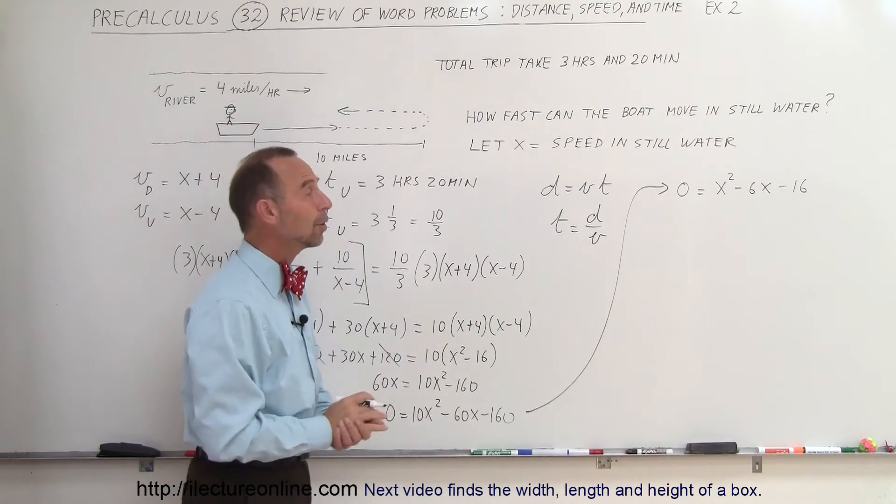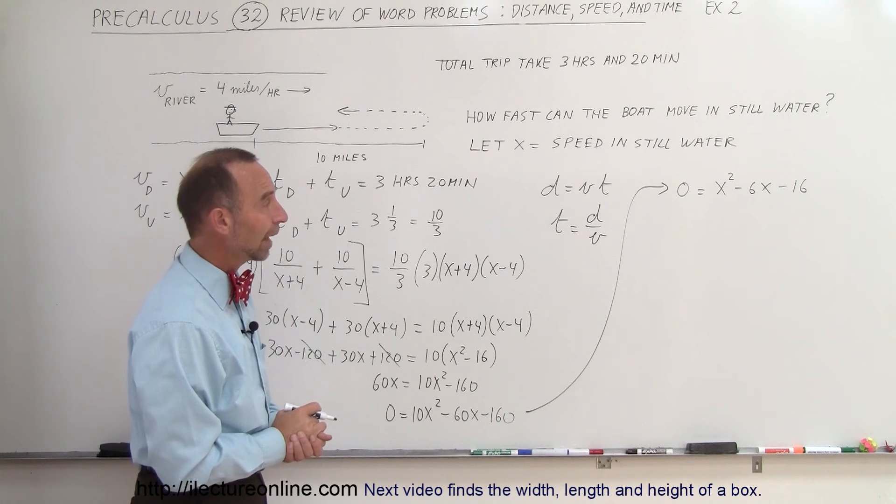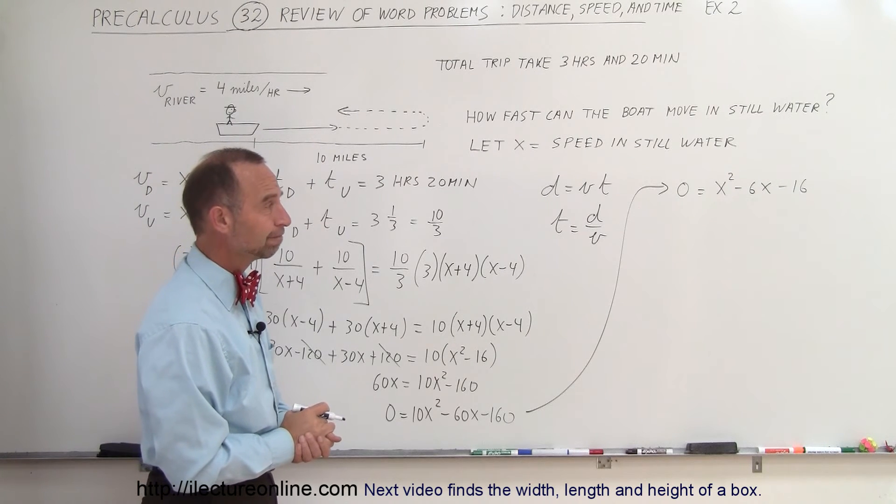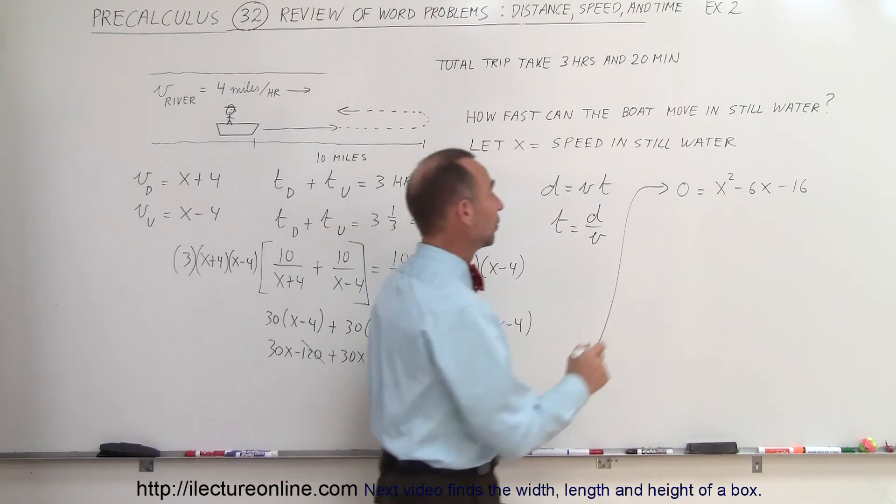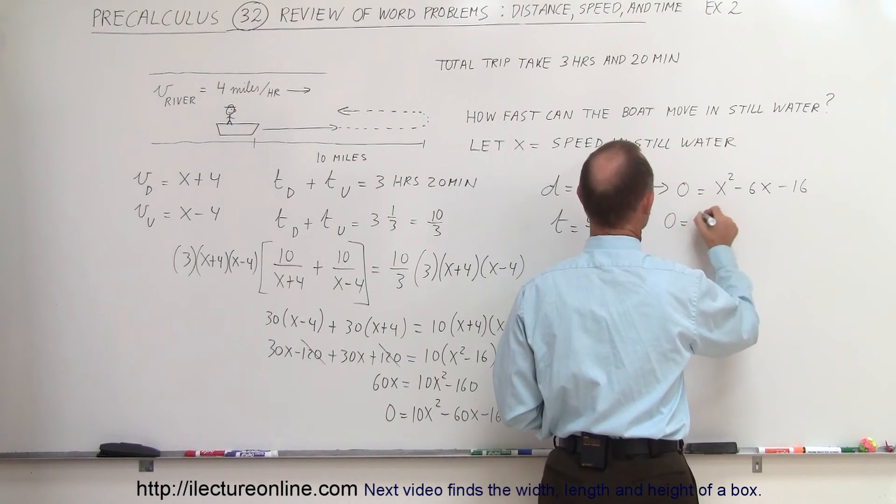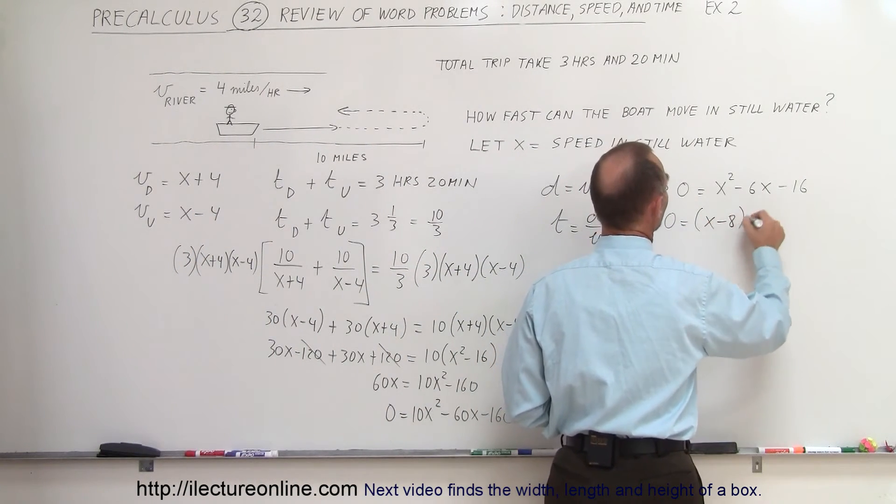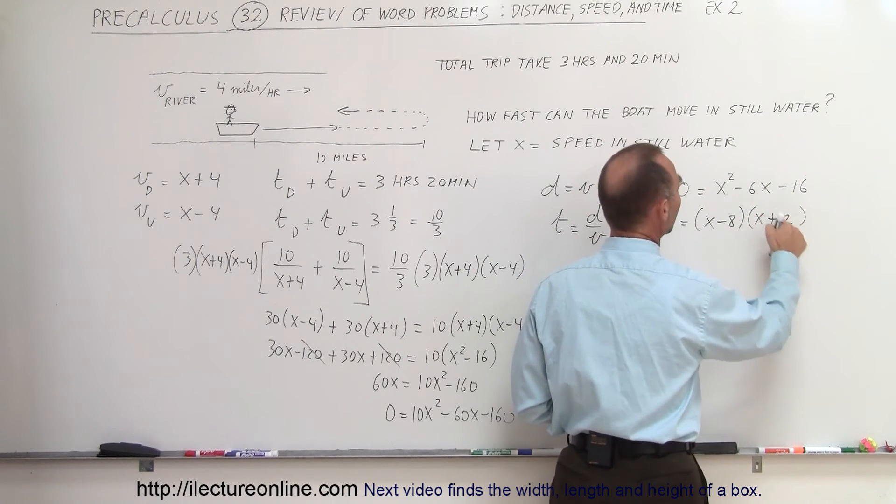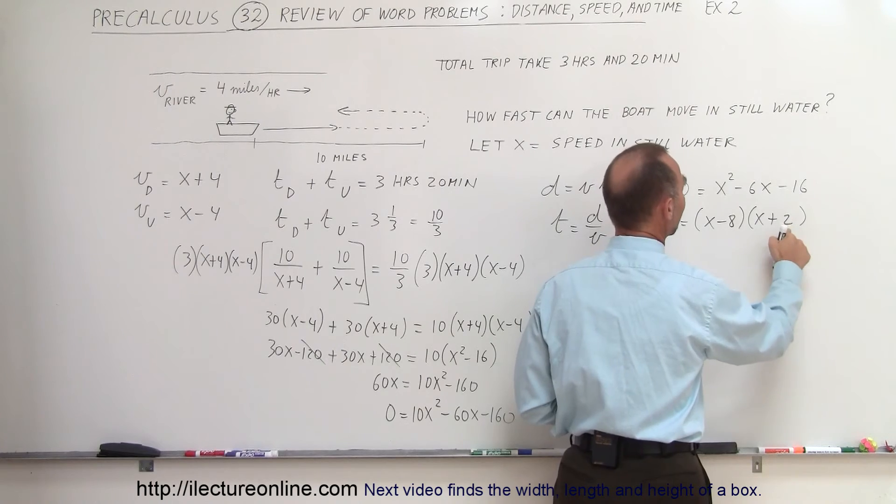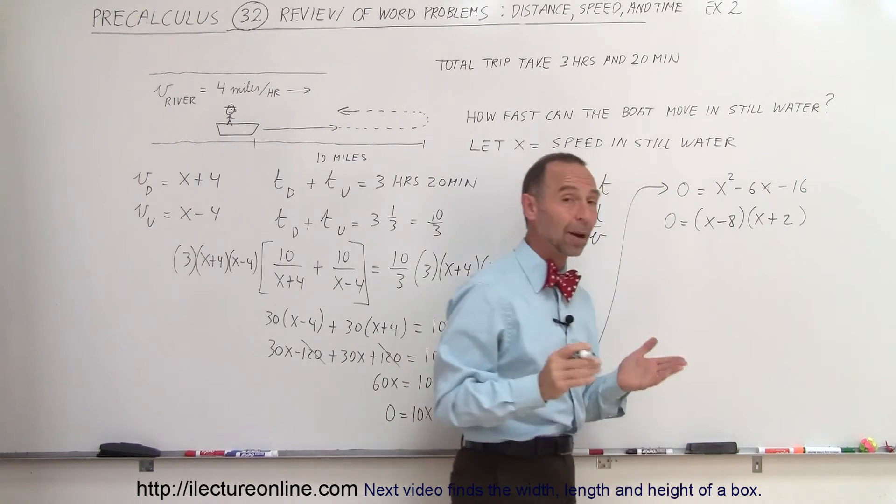All right, now I think we can go ahead and solve that, probably by factoring. Let's see, yes I think we can. So we can factor this, so zero is equal to x minus 8 times x plus 2, because minus 8 plus 2 gives you minus 6, and minus 8 times plus 2 gives you minus 16, so that's the proper way of factoring.